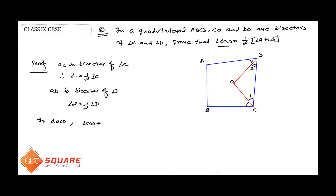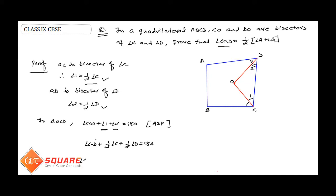Now in triangle OCD, angle COD plus angle one plus angle two is equal to 180 degrees, by the angle sum property of a triangle. Angle one and angle two can be replaced by half of angle C and half of angle D. So angle COD plus half of angle C plus half of angle D is equal to 180 degrees. Therefore, angle COD is equal to 180 minus half of angle C plus half of angle D.